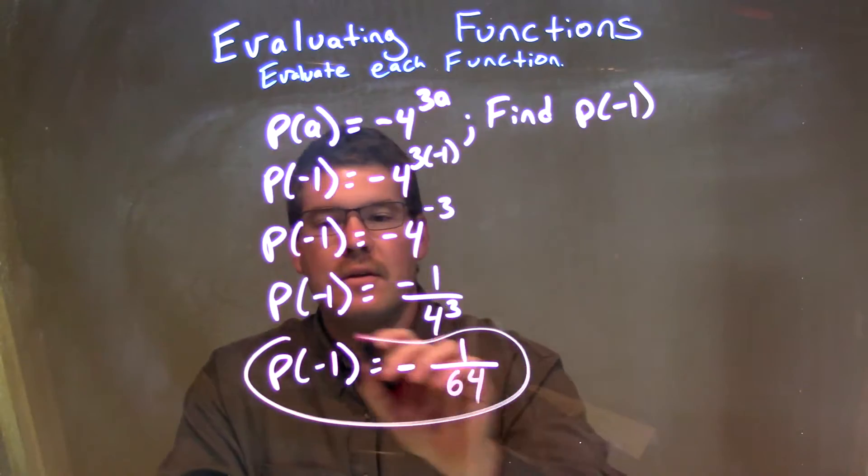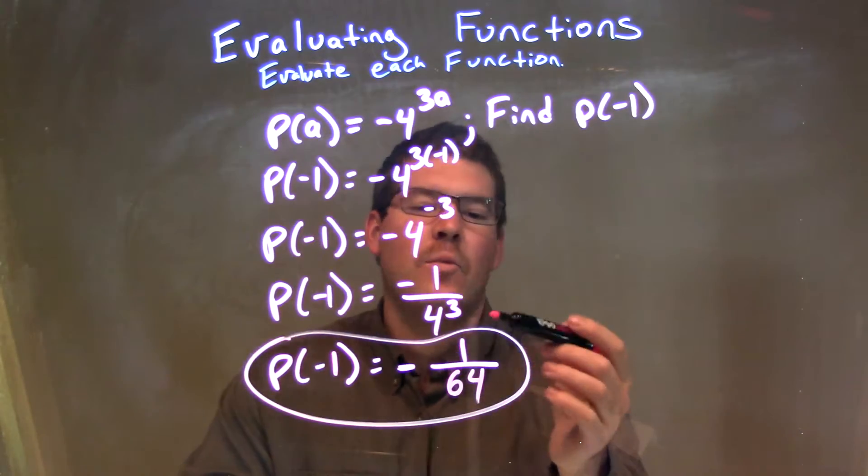So our final answer here is just P of negative 1 is equal to negative 1 over 64.